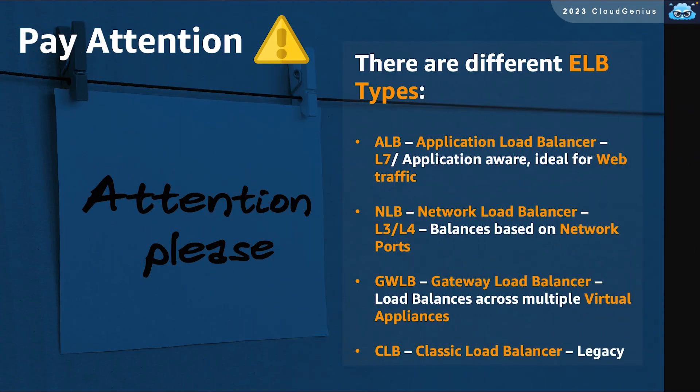Pay attention — there are different types of ELB, and you should have a general idea about them in case they show up on your exam. The ALB, or Application Load Balancer, is a Layer 7 load balancer that operates at the web layer and can distribute HTTP traffic, as it is capable of redirecting you based on the requested URL. The NLB, or Network Load Balancer, is not application-aware; it operates on Layer 3 and Layer 4, distributing network traffic based on port numbers with very low latency.